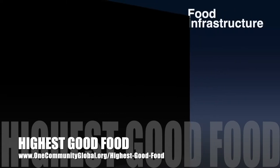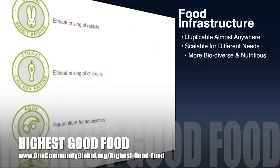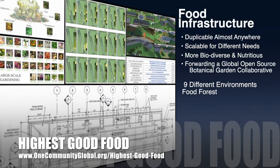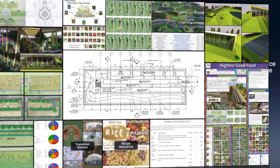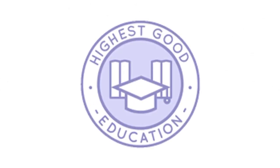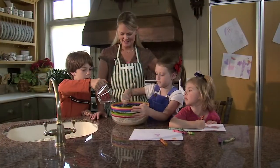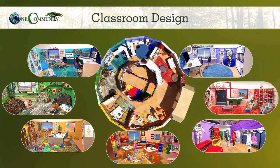One Community's approach to Highest Good Food is duplicable almost anywhere, scalable for different needs, more biodiverse and nutritious, part of forwarding a global open source botanical garden collaborative, and includes nine different free shared and duplicable growing environments. The next component is Highest Good Education — this component is complete and pretty much ready to launch once we're on the property. It is designed for all age groups, adaptable to any schooling environment, inspiring and fun for all participants, and includes national standards, all subjects, lesson plans, teaching strategies, learning strategies and tools, classroom design, and more.